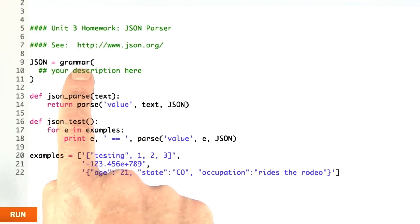What I'm asking you to do is to write this grammar. You can look at json.org to see the definition. There is a little grammar there on the right-hand side. It's not quite in the right format that we expect here, so you're going to have to translate it into the right format.